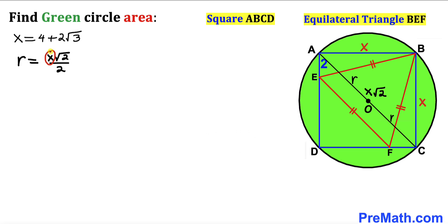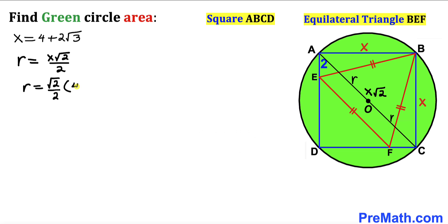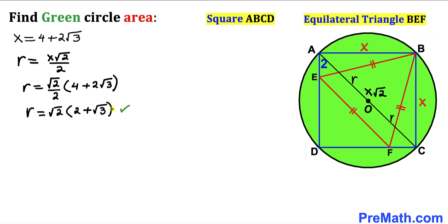Substituting x = 4 + 2√3: r = (√2 / 2) · (4 + 2√3). The factor of 2 in the numerator and denominator reduces, giving r = √2 · (2 + √3).